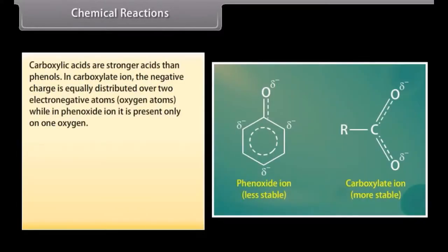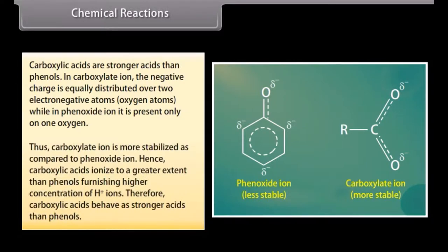Carboxylic acids are stronger acids than phenols. In the carboxylate ion, the negative charge is equally distributed over two electronegative oxygen atoms, while in the phenoxide ion it is present only on one oxygen. Thus the carboxylate ion is more stabilized as compared to the phenoxide ion. Hence carboxylic acids ionize to a greater extent than phenols, furnishing a higher concentration of hydrogen ions. Therefore carboxylic acids behave as stronger acids than phenols.